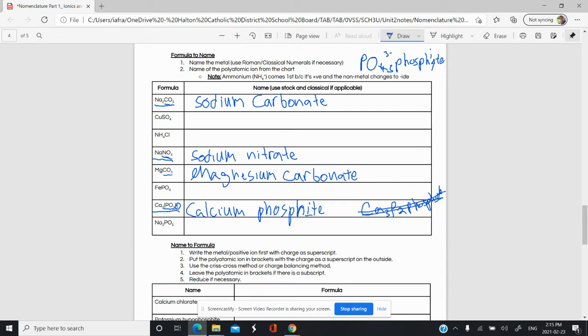Now let's go to Na2PO5. Here's another case where we have a weird looking polyatomic ion. We're not quite sure what it is yet. It's PO5. Actually, let me fix this before we continue. This should be Na3PO5, not Na2.